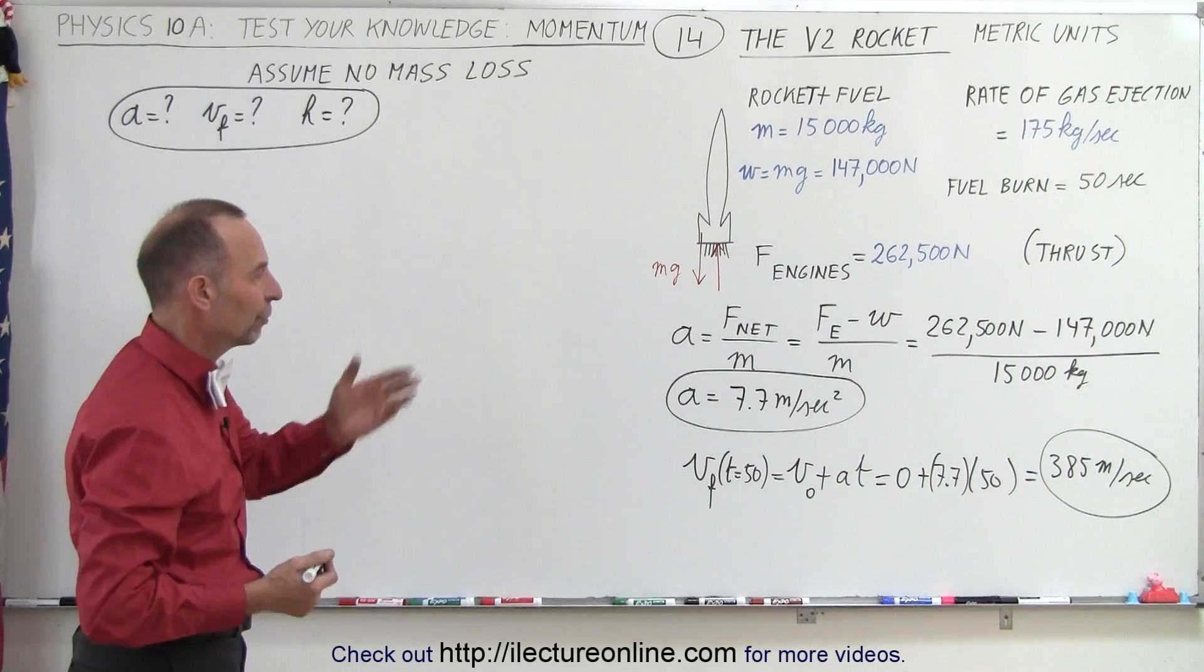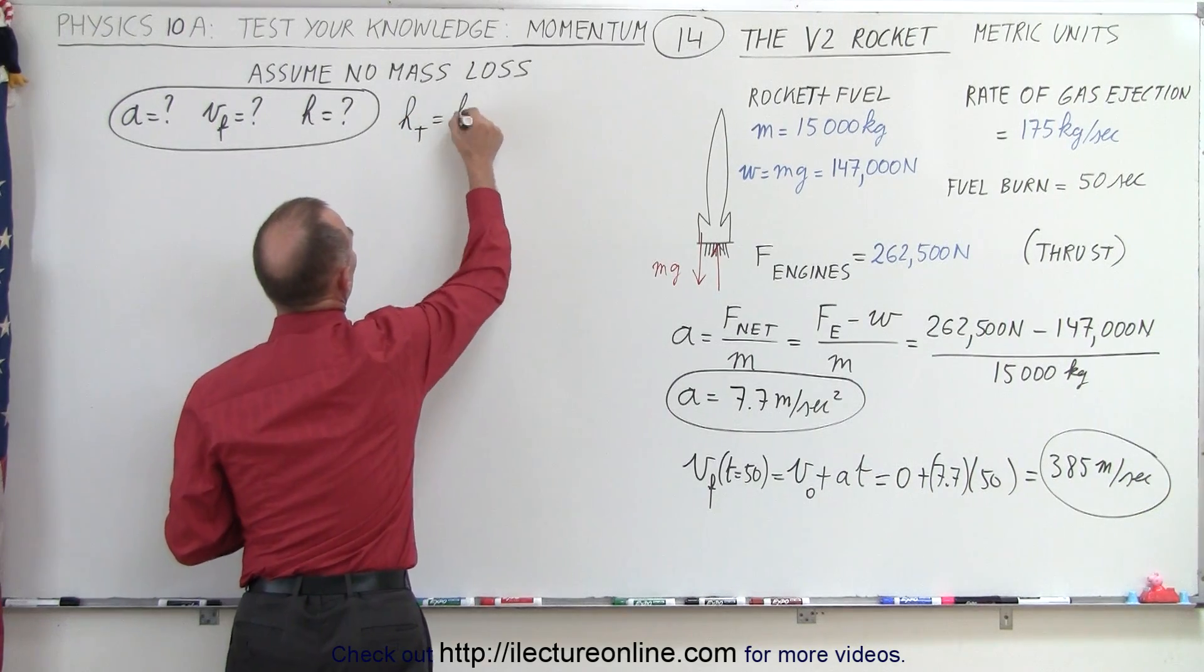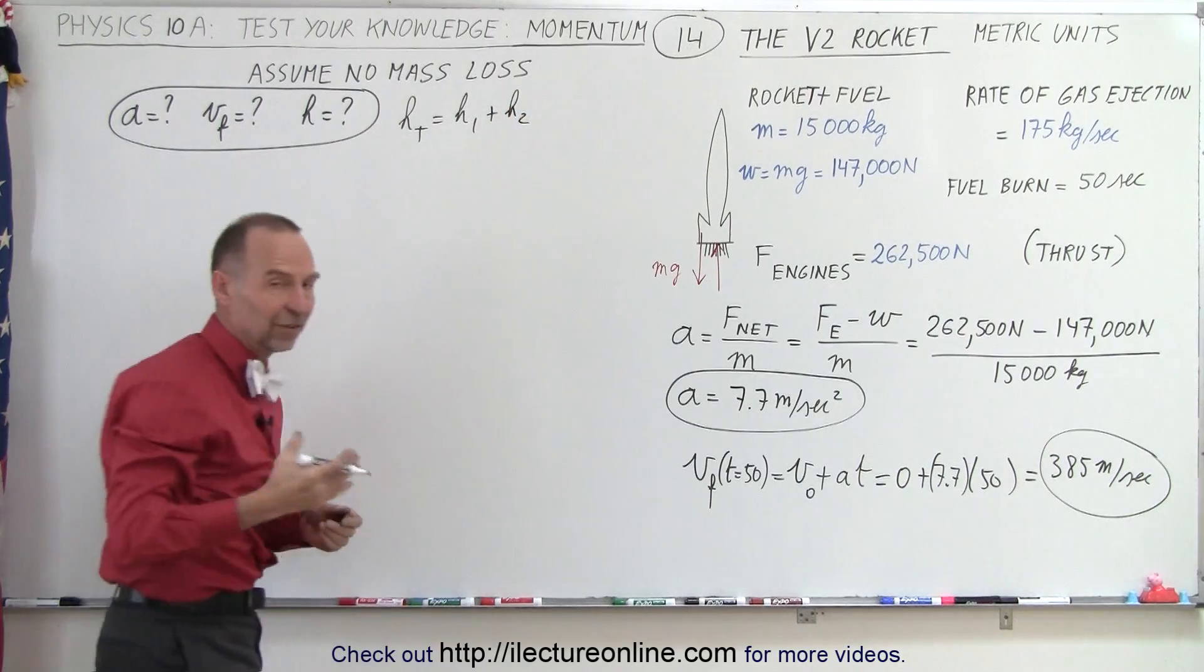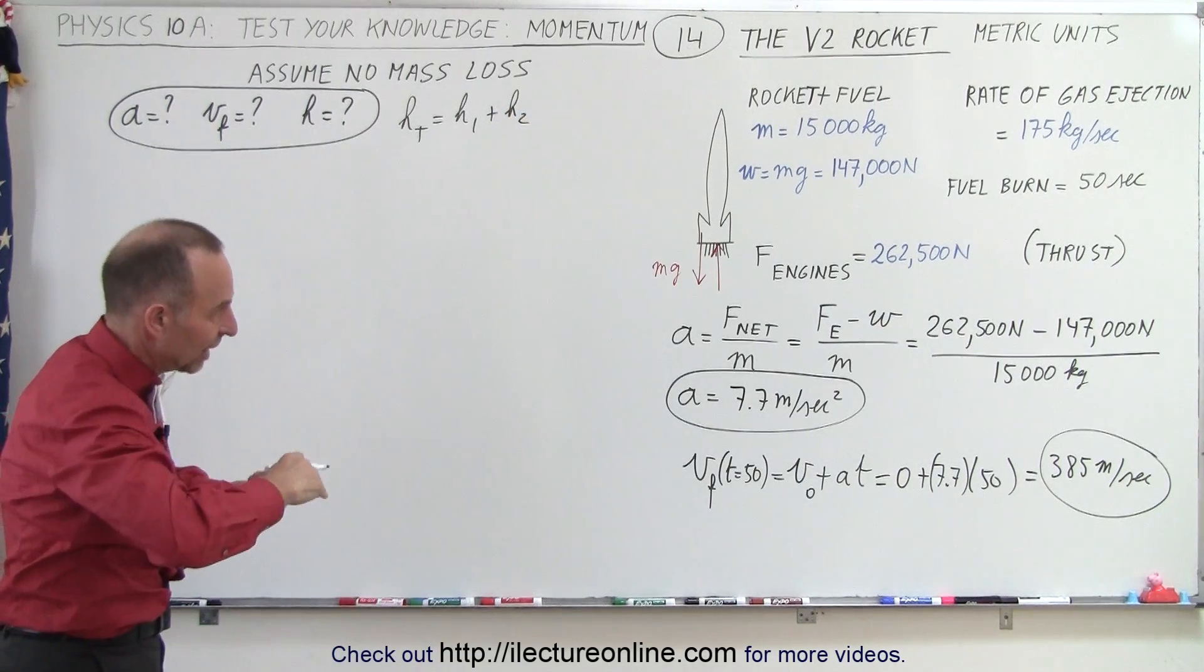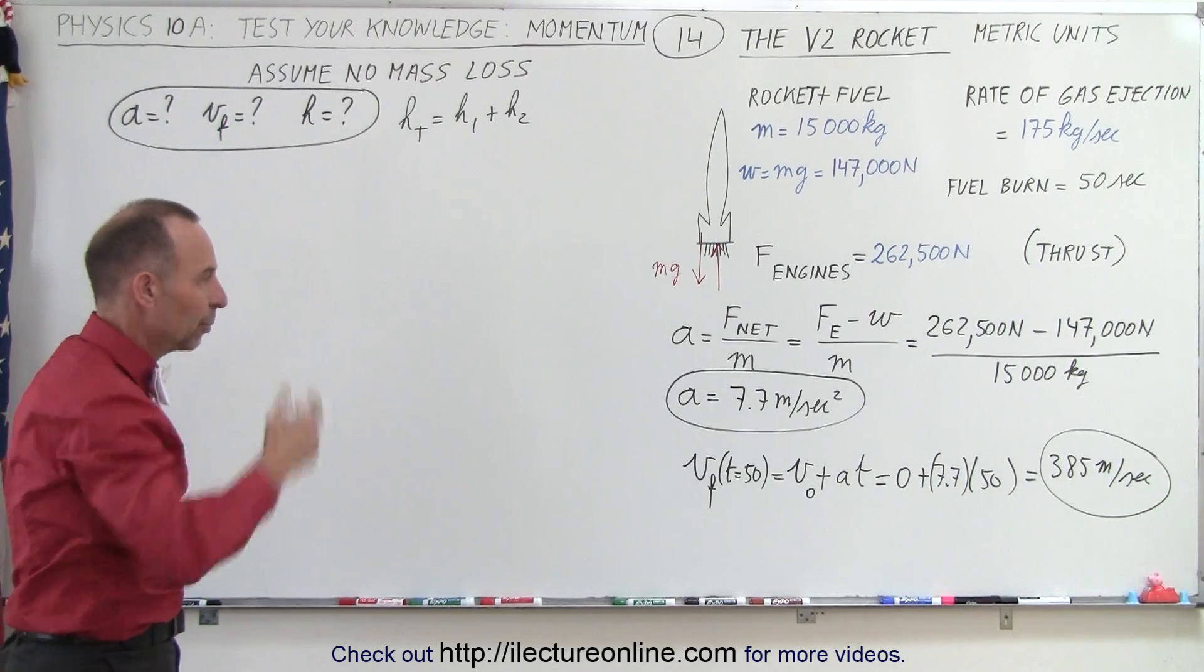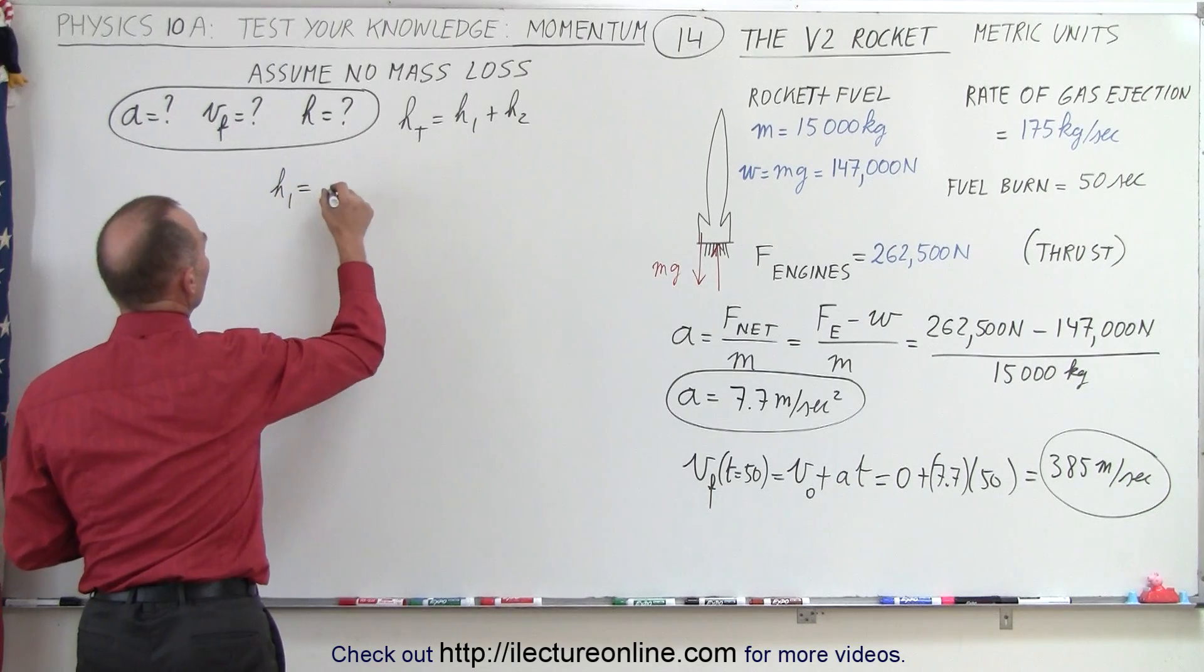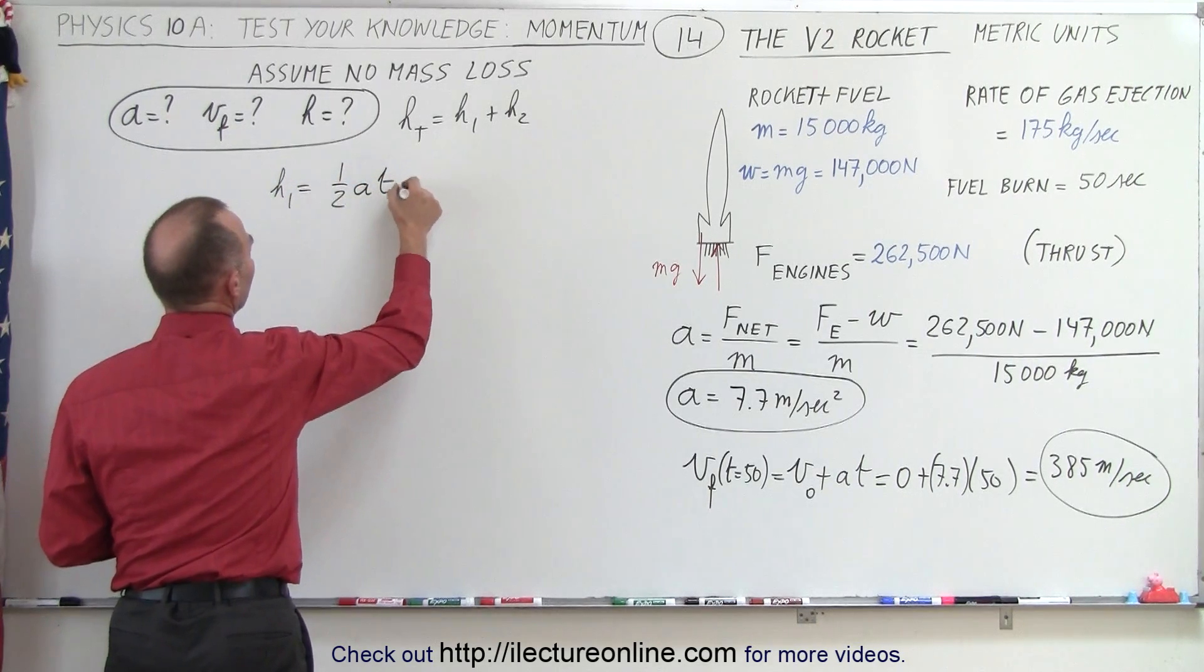So we can say that height total is equal to H1 plus H2. So H1 is the height it gains when the fuel burns out. H2 is the additional height it gains until it loses its upward momentum. And so H1 is going to be equal to 1 half the acceleration times the time squared.